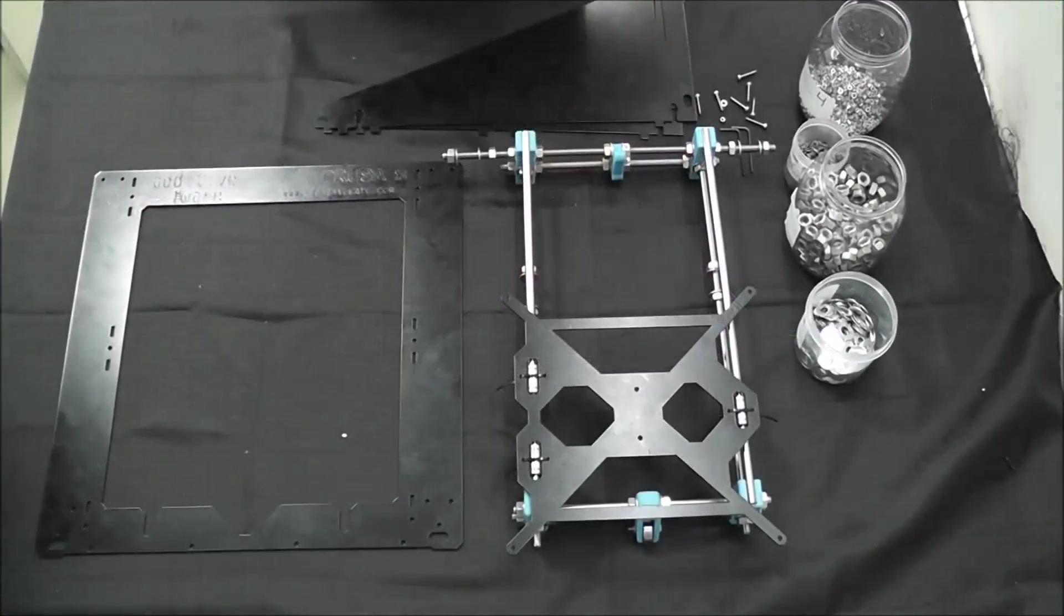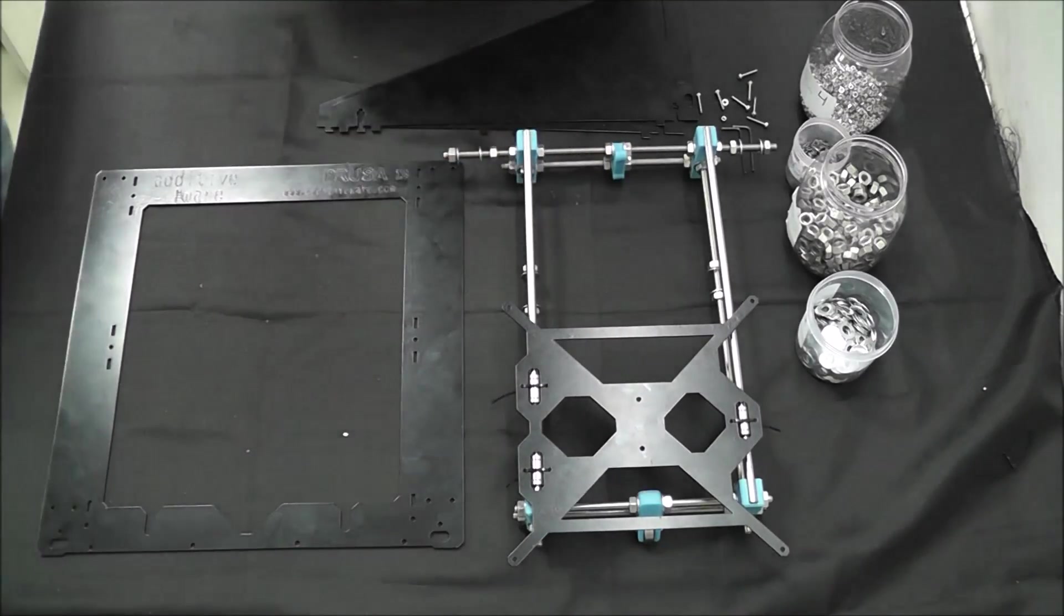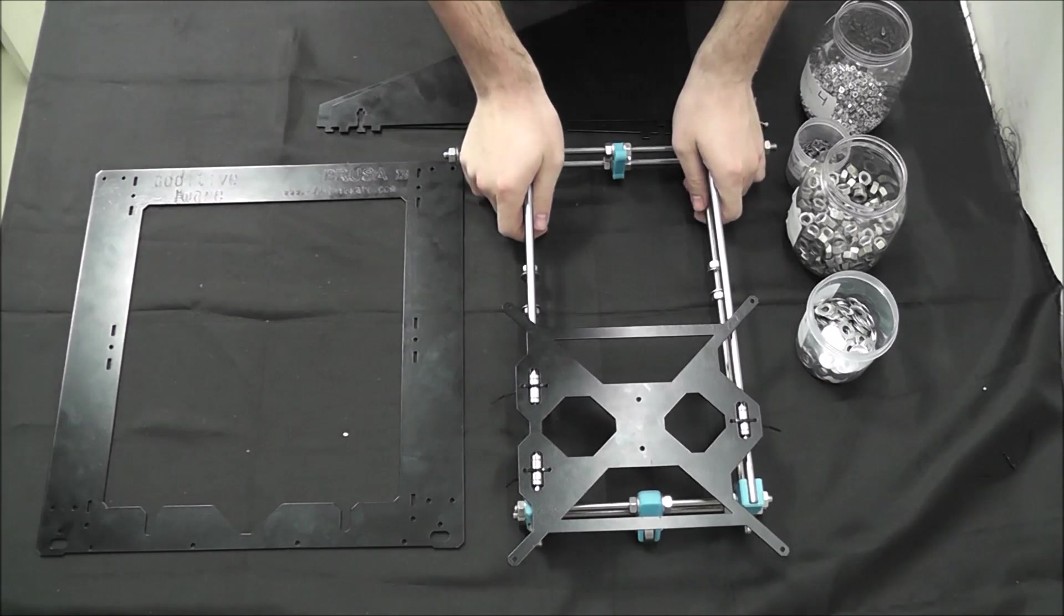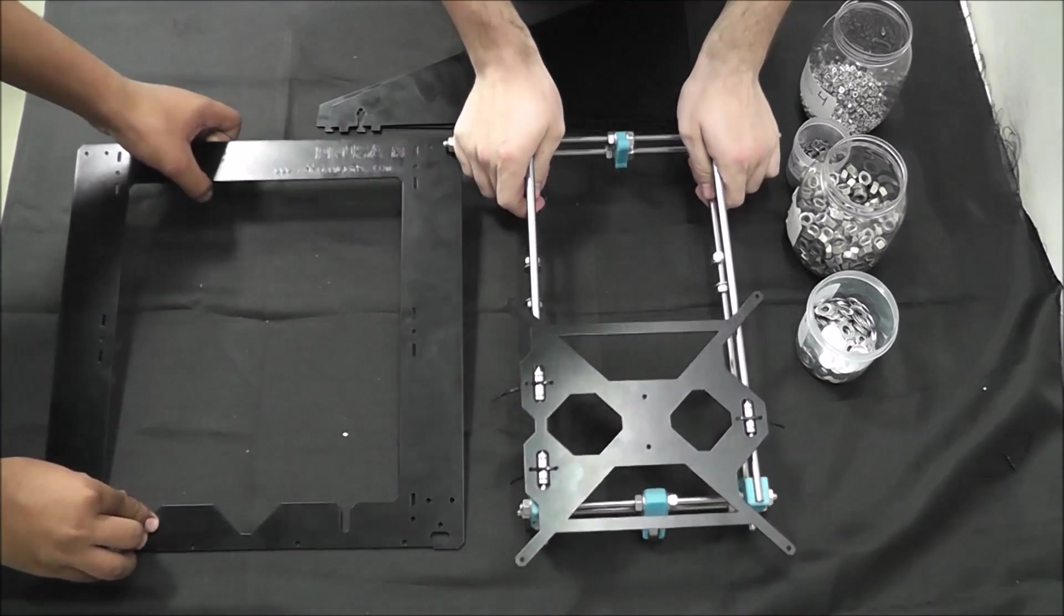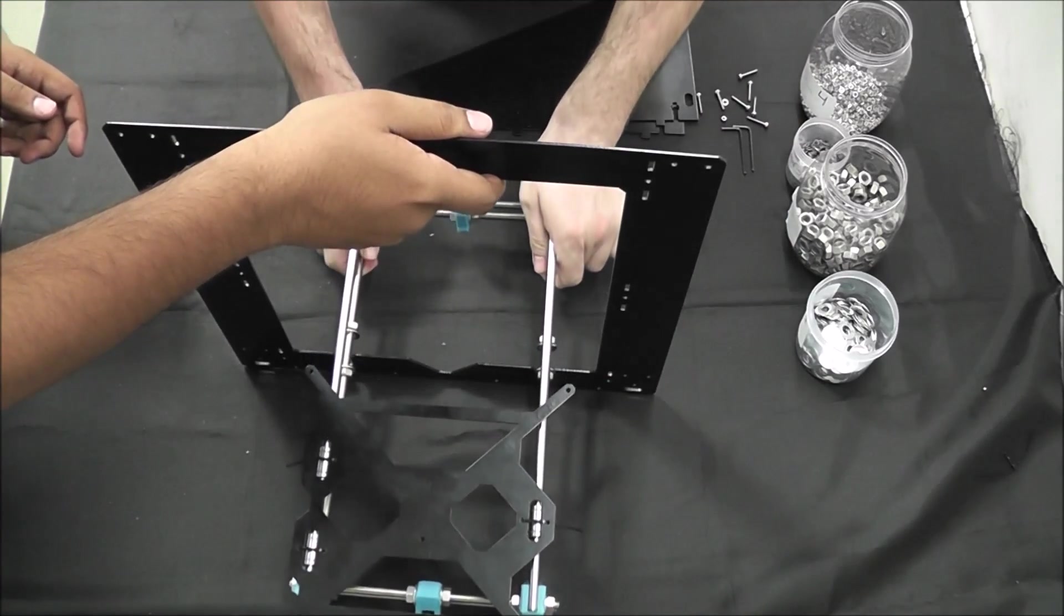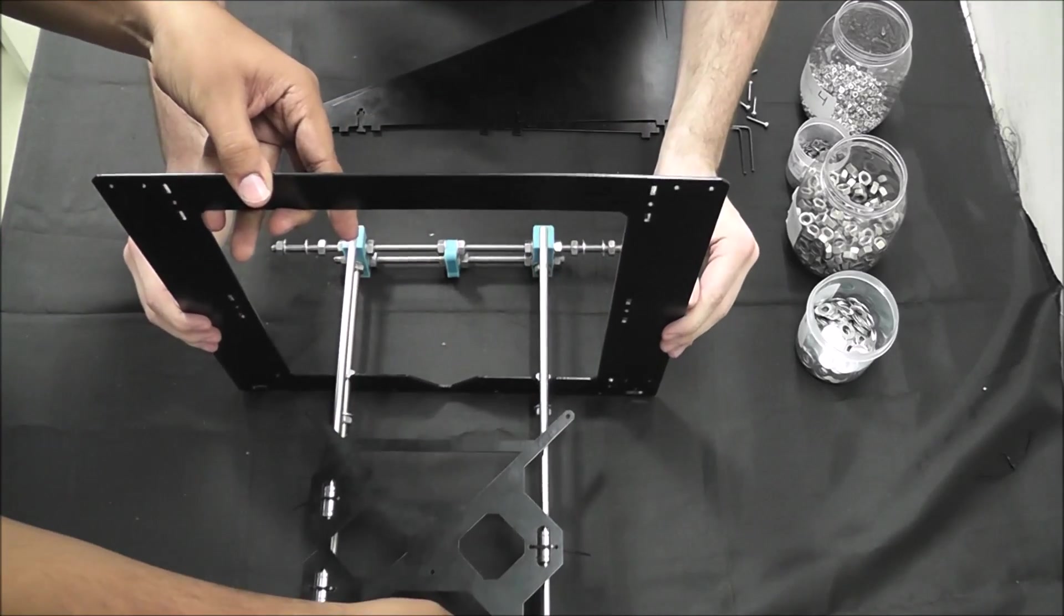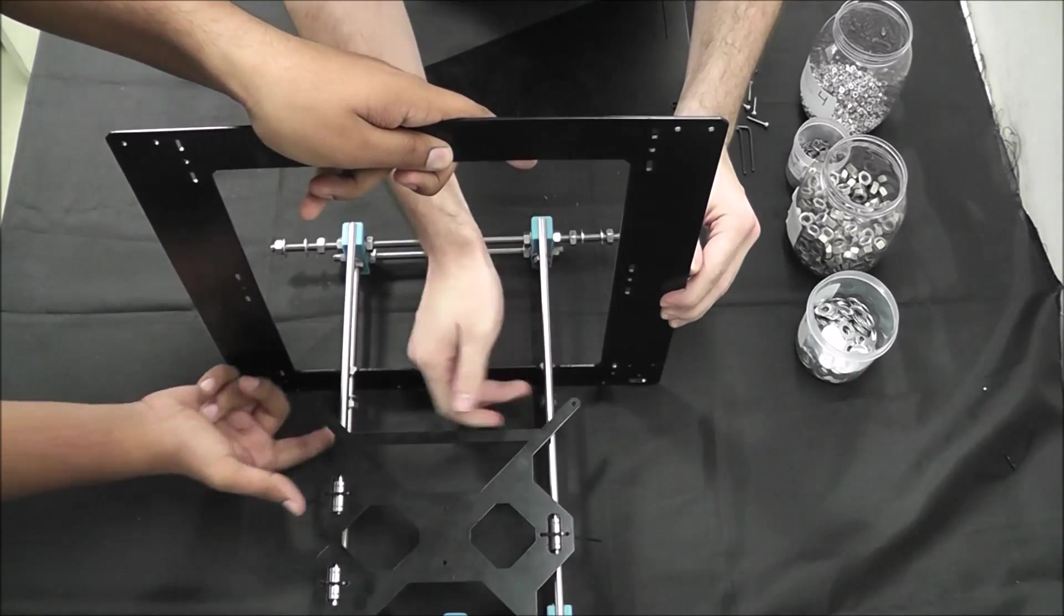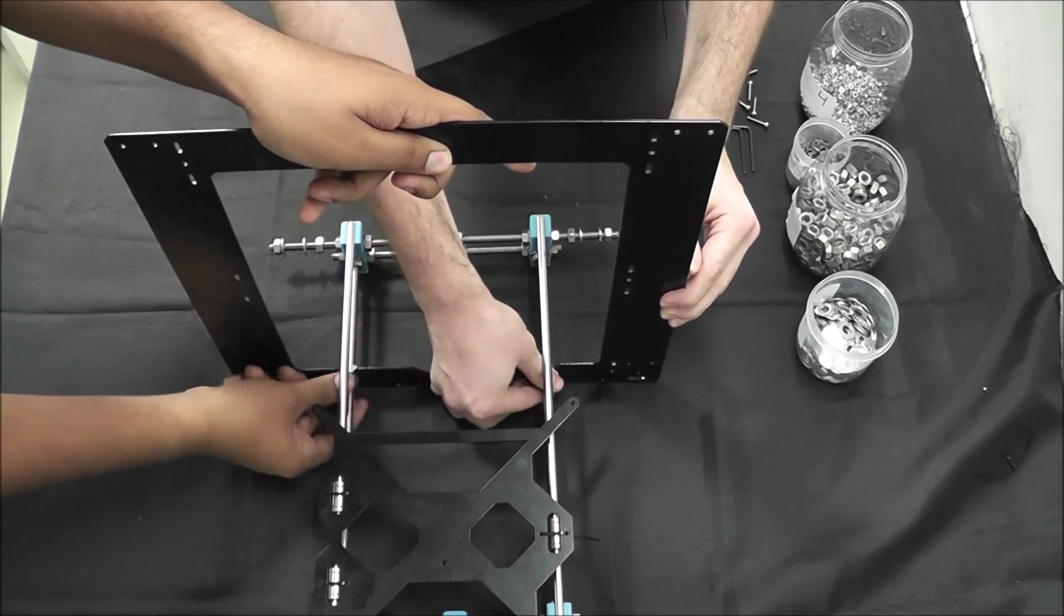Okay so now we have the bed carriage mounted on the y-axis and we're going to go ahead and insert it in the main frame of the Prusa i3 and also attach the triangles. So we're going to go ahead and put the frame in here. We're going to slide it into the two grooves on the bottom of the frame and line it up and make sure the frame is parallel with the back end of the y-axis. So we're going to go ahead and tighten those up just to hold the frame in place.